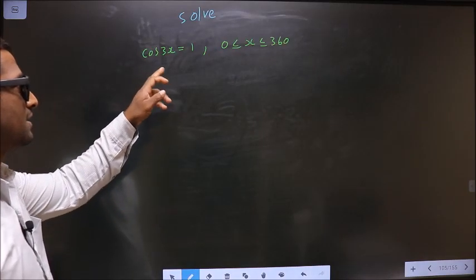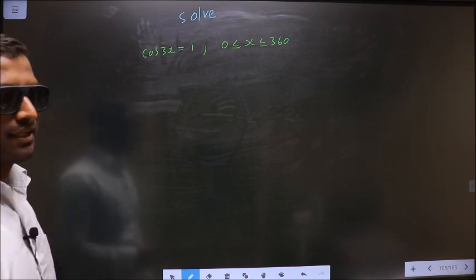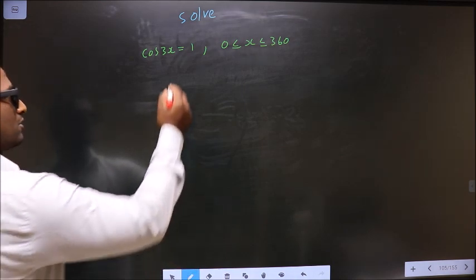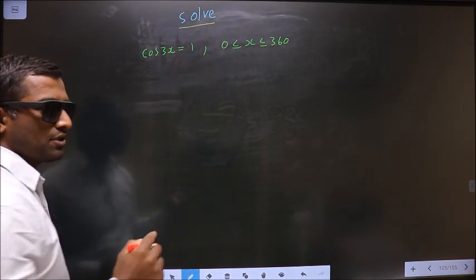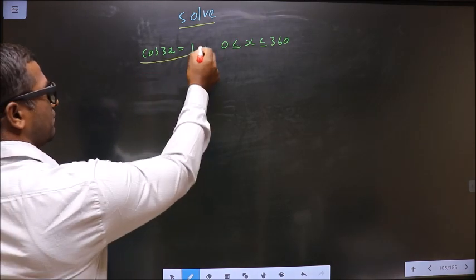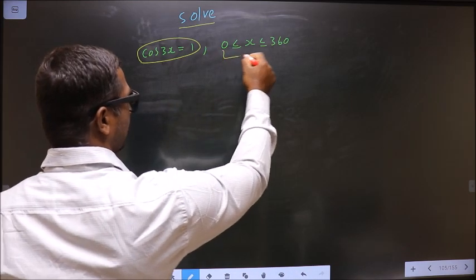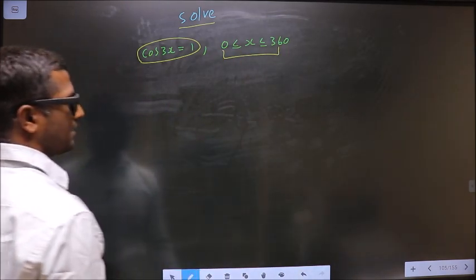Solve cos 3x equals 1 where x lie in the interval 0 to 360 degrees. Here they told you to solve, so you should find the values for x satisfying this equation and also it should lie in the interval 0 to 360 degrees.